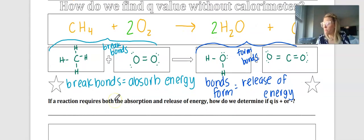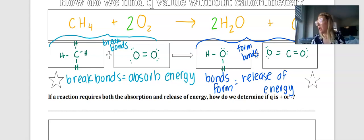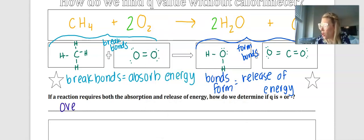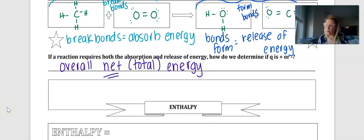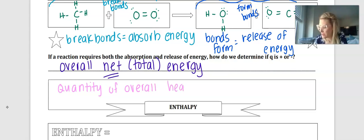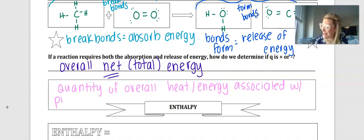And so now you're probably looking at this and thinking, bonds are breaking and you're absorbing energy and bonds are forming and you're releasing energy. So aren't you both endo and exothermic if you're absorbing and releasing? And the answer is kind of, except one of those two is going to have greater amounts of energy. And so if the reaction requires both absorption and release, how do we determine if our Q value is positive or negative? And so what we need to look at for this is our overall net or total energy. So we're going to be looking at the total of the absorption and release to determine our overall energy. And this is called enthalpy.